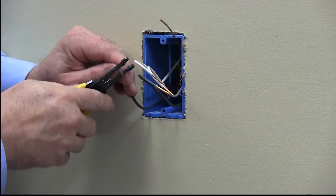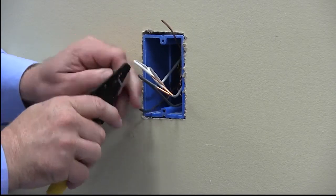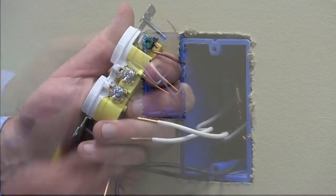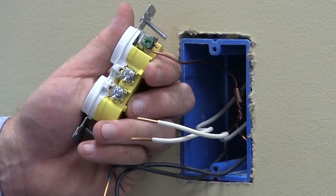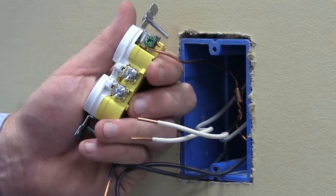Take the remaining wires and strip them 5 eighths. Take the solid ground wire, loop it, connect it, and then terminate it.